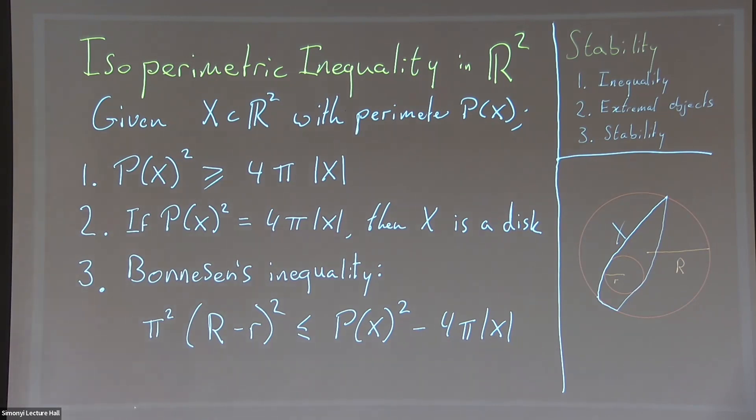Now what does the stability result say? One stability result says: if I have almost inequality, meaning the left side is only slightly bigger than the right, then my set is close to a disk. To measure how far from a disk, I introduce the in-radius (biggest circle contained inside) and out-radius (smallest circle containing the set). If X is a disk, these coincide, so their difference measures closeness to a disk.